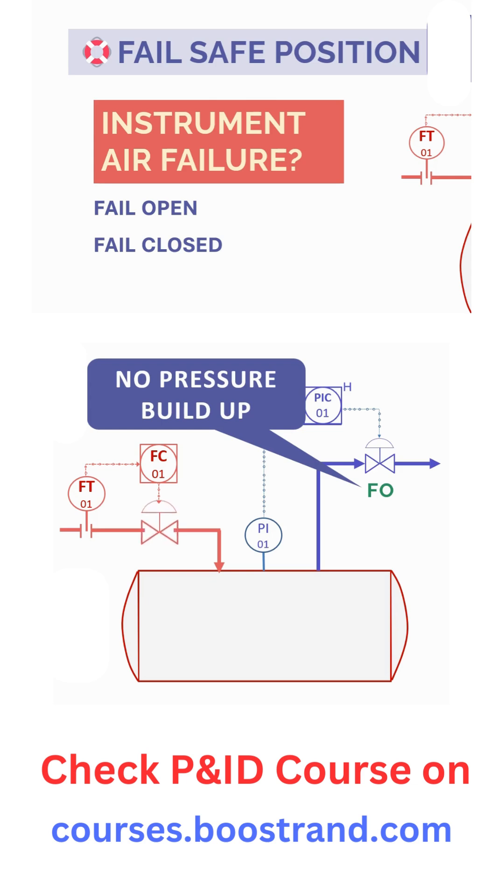go to the closed position, which means that the source of pressure, which can be a source of hazard, is cut from the vessel. So this is the safe position for both valves if we are talking about protecting the vessel from any upset. So in this scenario, there is no risk of over pressure in case the instrument air fails.